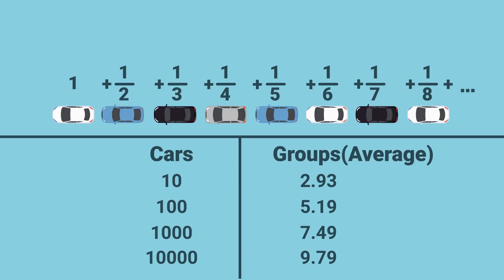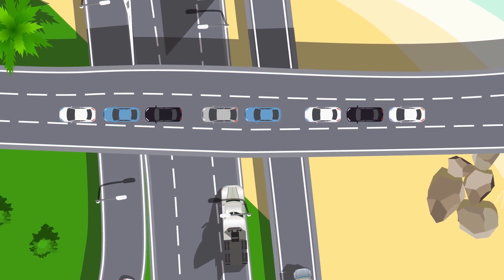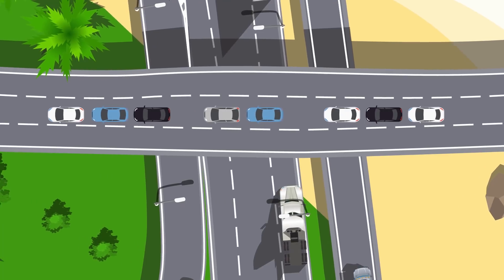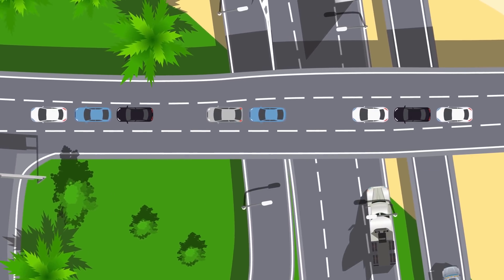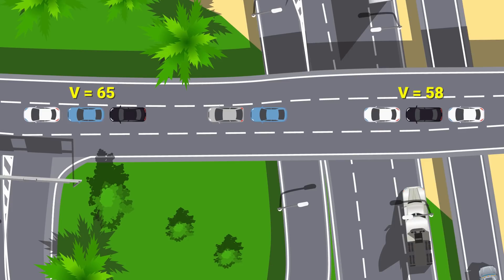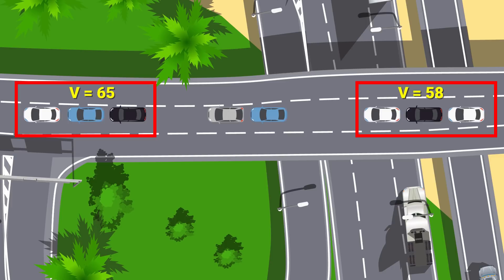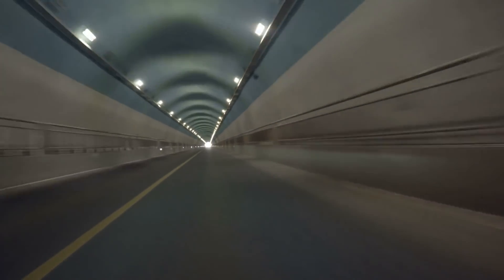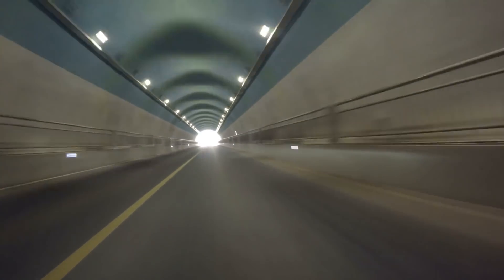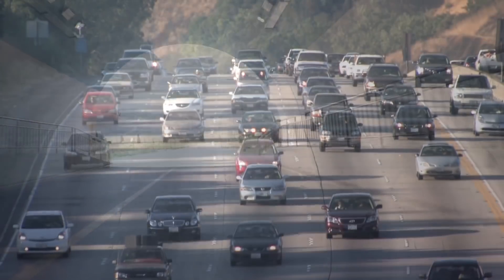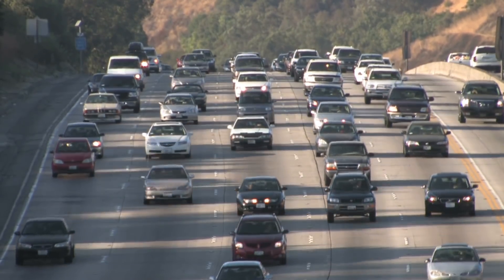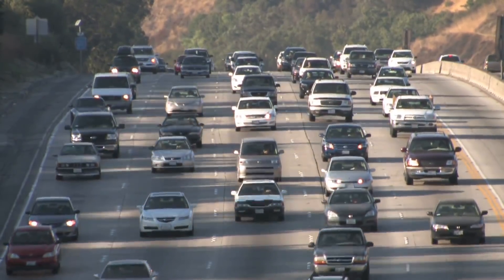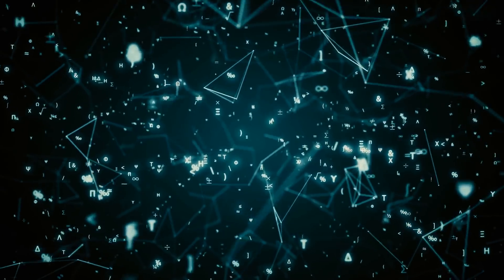Relating this to the real world: if there was a long one-lane bridge with constant traffic, since the velocity of each group by default decreases as you move back, at any moment the velocity of cars getting onto the bridge will likely be slower than those leaving it. Or another way to put it: if you looked at cars going into and out of a one-lane tunnel where there is traffic, you'd probably find that cars exiting the tunnel have a faster velocity than those entering. Not too many further applications I can see, but it's an interesting example of the harmonic series showing up in the real world.